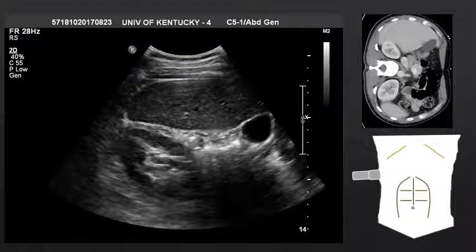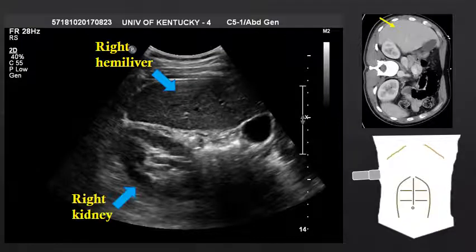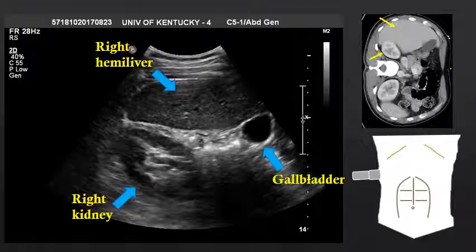If we now move into a transverse view, oriented on the right lateral subcostal region, we see the kidney come into view. The right kidney sits just alongside the right hemiliver, and we can also see the gallbladder within our view.